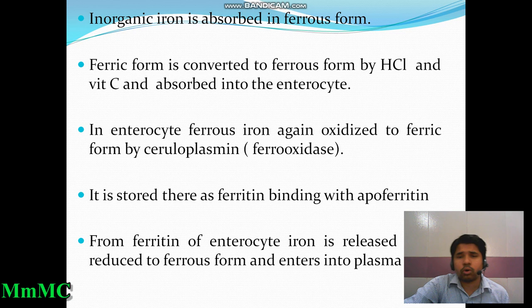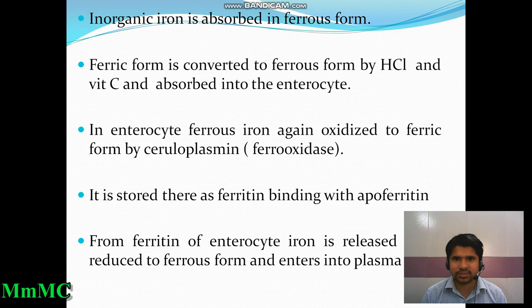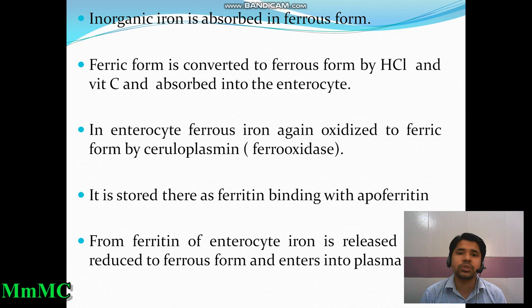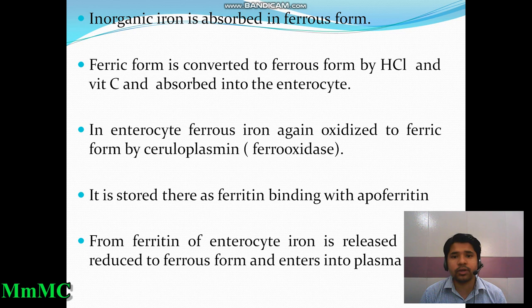When we treat a patient with gastritis or peptic ulcer disease, we give anti-ulcer drugs — proton pump inhibitors such as omeprazole, lansoprazole, or rabeprazole, or ranitidine. These drugs decrease secretion of hydrochloric acid, which ultimately decreases the conversion of ferric to ferrous iron, thereby decreasing iron absorption. A patient on long-term anti-ulcer drugs may therefore develop iron deficiency anemia.